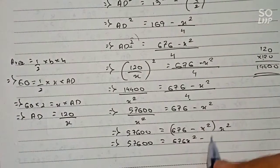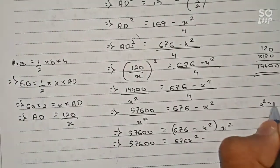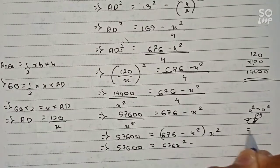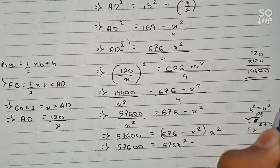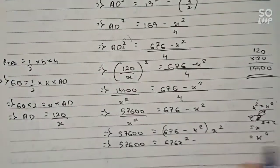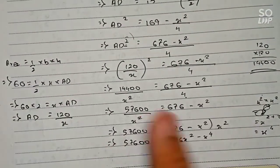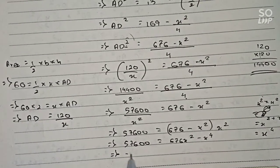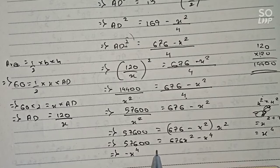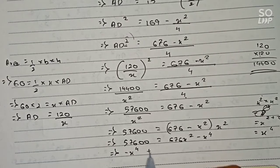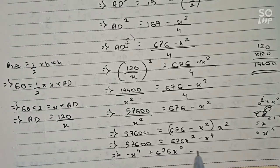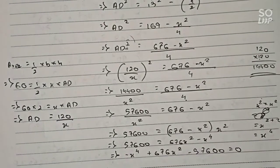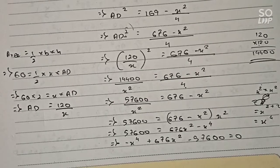Rearranging: −x⁴ + 676x² − 57600 = 0. Multiplying through by −1 to make the leading term positive: x⁴ − 676x² + 57600 = 0.